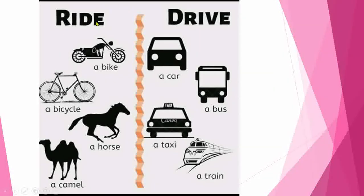Ride is always used for riding a bike, cycle, horse, camel, and similar things. So how can you say it? I am riding a bike. We can use it in sentences like: I am riding a bike. He can ride a bicycle. I can ride a horse. I can ride a camel.